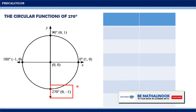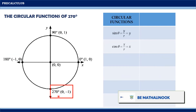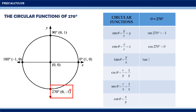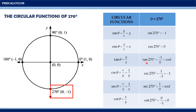Finally, for 270 degrees with coordinates (0, -1), where x equals 0 and y equals -1, the values of the circular functions are: sine 270° = -1; cosine 270° = 0; tangent 270° = -1/0 = undefined; cosecant 270° = 1/(-1) = -1; secant 270° = 1/0 = undefined; and cotangent 270° = 0/(-1) = 0.